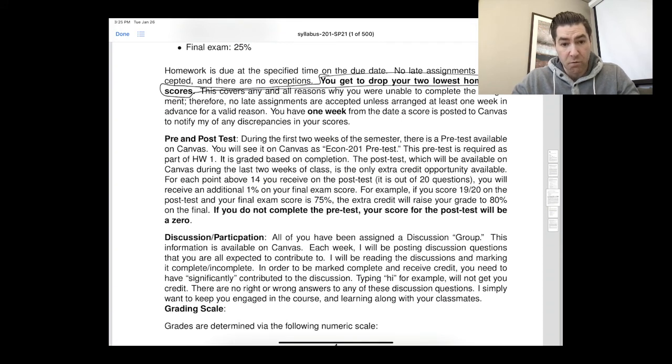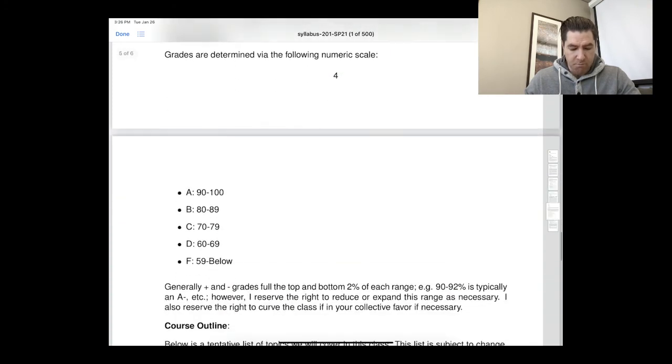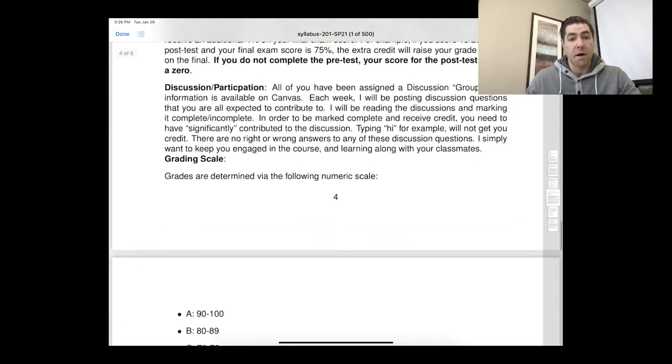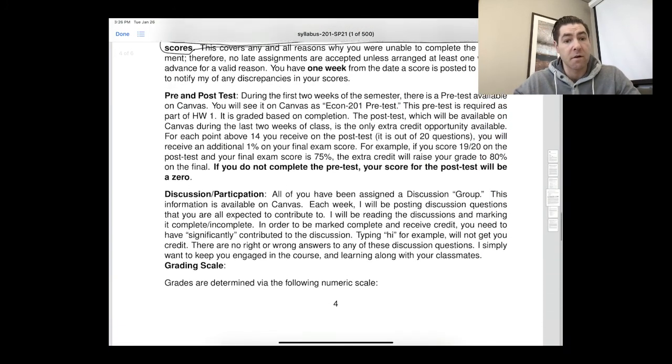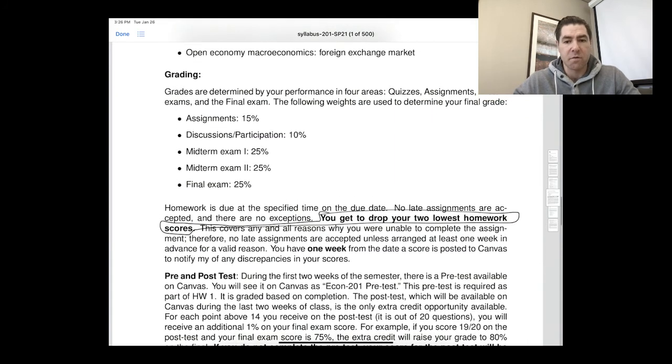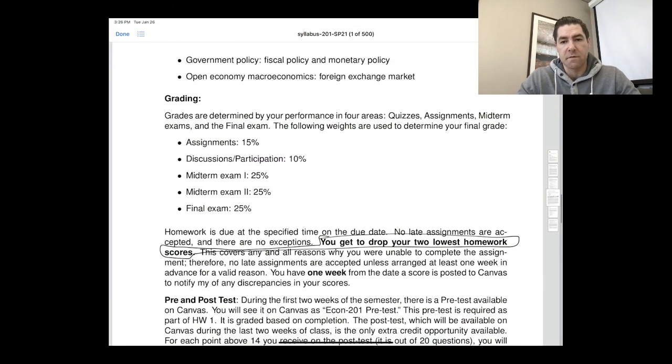For every point above 14 you get on the post test correct, you will get one percentage point additional on your final exam score. In my example, if you got 75% on your final exam and you got 19 out of 20 on the post test, that's five extra percent on your final, taking you up to 80%. You have to do the pre-test in order to have this option, so please make sure you do that.